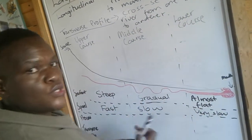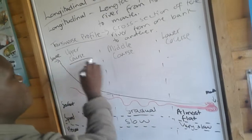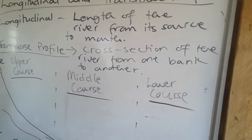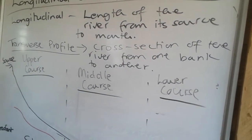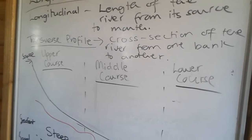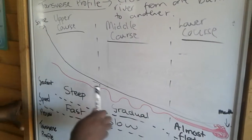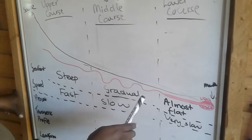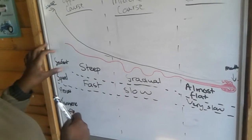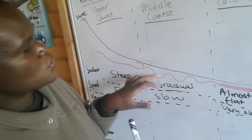When we analyze the profiles of the river, we divide our river into three sections: the upper course, the middle course, and the lower course. This line indicated in red shows how the river looks from the upper course to the middle course.